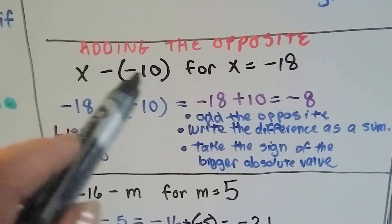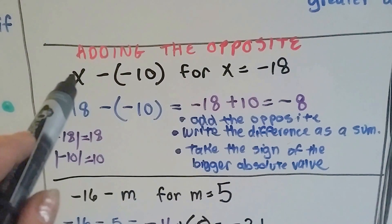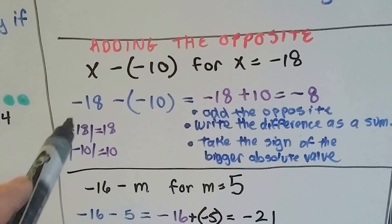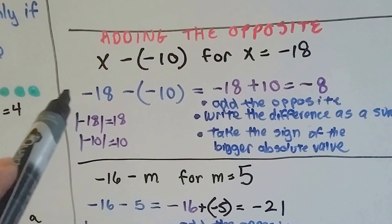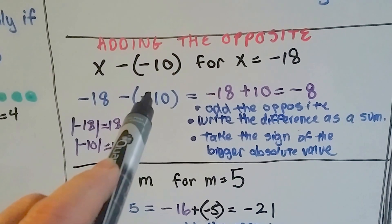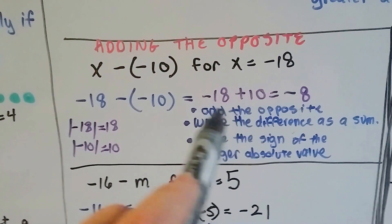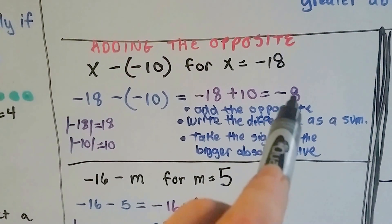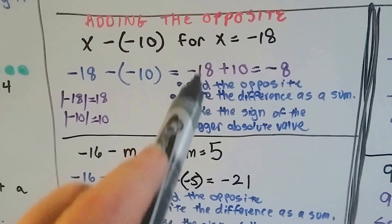The problem says x minus negative 10, for x equals negative 18. All we need to do is put the negative 18 in where the x is, so we rewrite it as negative 18 minus negative 10. Remember, we add the opposite: instead of subtracting a negative 10, we add a positive 10. Now we've got negative 18 plus 10. If you owed $18 and you paid $10 of it, you'd still owe $8, so the answer is negative 8. It takes the sign of the larger absolute value, and that was 18.